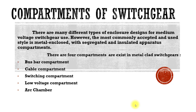Now we will see the different compartments that exist in the switchgear. There are many different types of enclosure designs for medium voltage switchgear in use. However, the most commonly accepted style is metal enclosed with segregated and insulated apparatus compartments. Most common designs have four compartments: the bus bar compartment, the cable compartment, the switching compartment, the low voltage compartment, and a less common arc chamber.